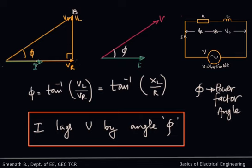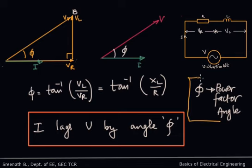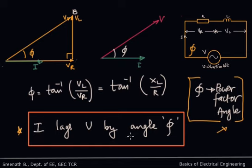From the voltage triangle, the angle between voltage and current is defined as φ. φ can be calculated as tan⁻¹(Vl/Vr) from the voltage triangle, which equals tan⁻¹(XL/R) from the impedance triangle. φ is defined as the power factor angle. The angle φ between the supply voltage and the current shows that the current lags the voltage by an angle of φ.